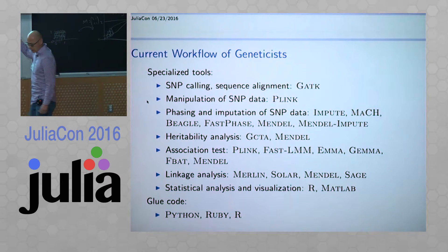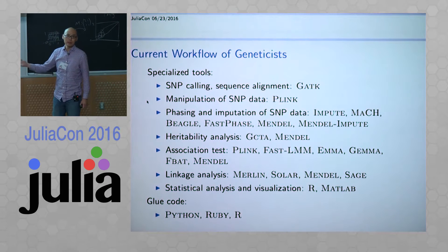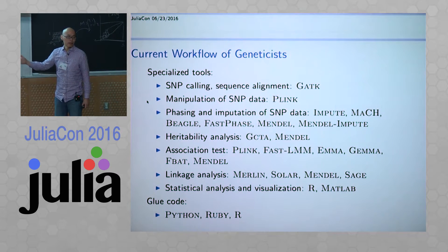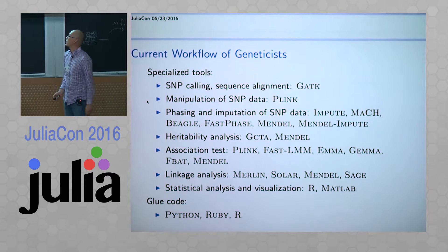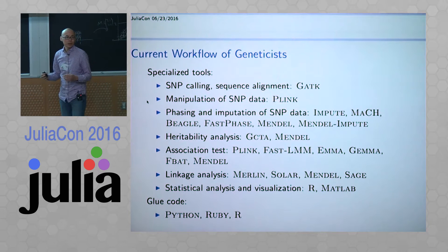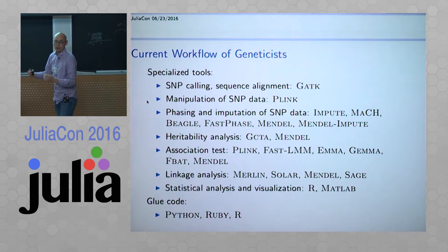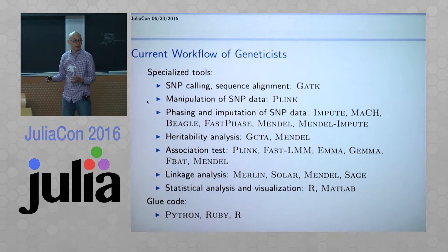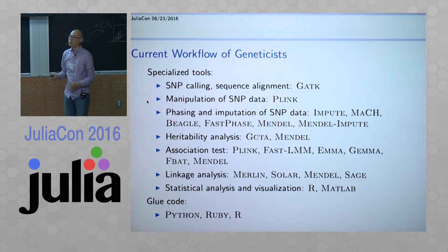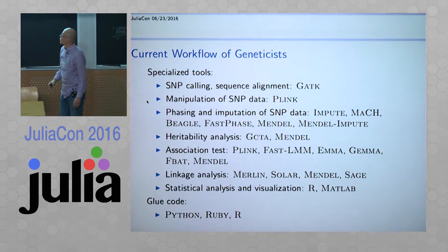This is a typical workflow of today's genetics. From the point the data is generated from the machine to publication, getting scientific findings, usually there is a very long pipeline and geneticists have to deal with probably up to a dozen software. When the data is coming from the machine, you need to do genotype calling, SNP calling, sequence alignment. So you need to learn to use the software GATK, and then you get the SNP data.